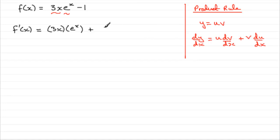Then we do it the other way around. We take the other part, in this case e to the x, and multiply it by the differential of this part. Differential of 3x, which is going to be simply 3.